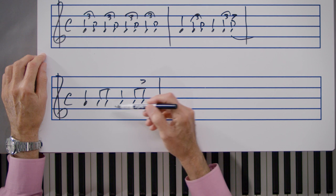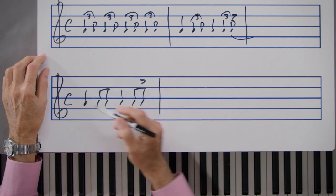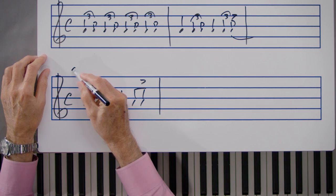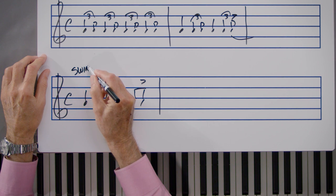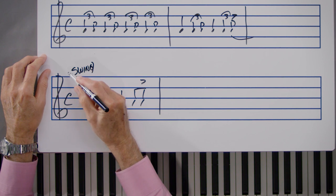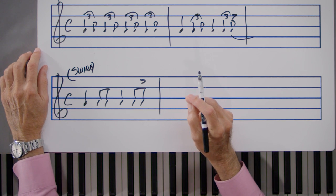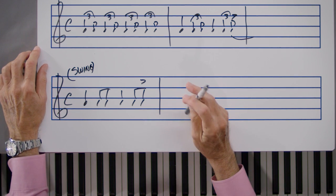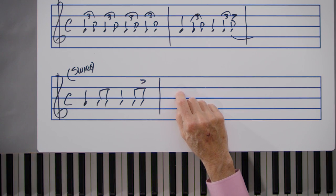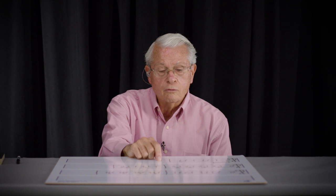Then somehow we would agree upon—either the music, the style of the music would dictate, or we would have the actual word that would say 'swing, interpret as a swing style.' That was a good overview of the swing eighth note. Let's now take a closer look at the swing eighth note, its sound, and its notation.